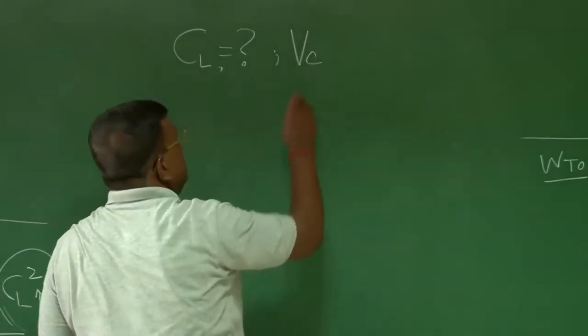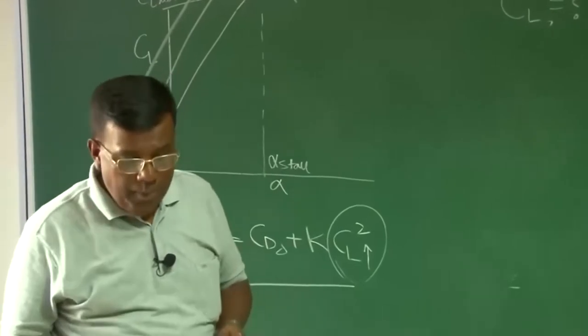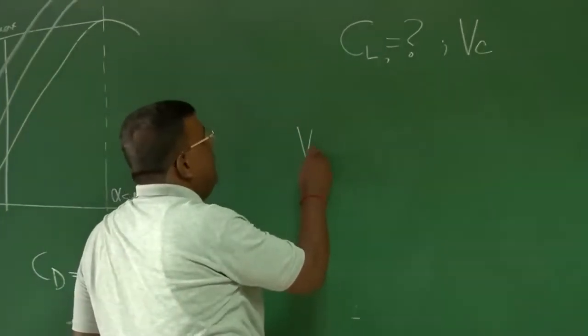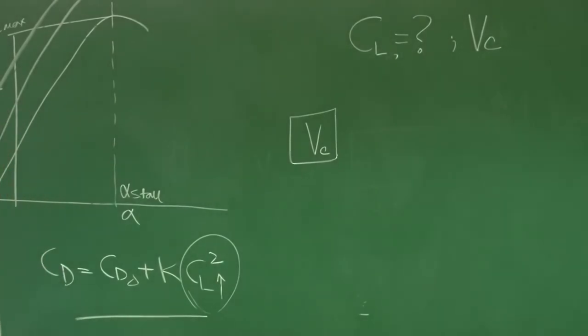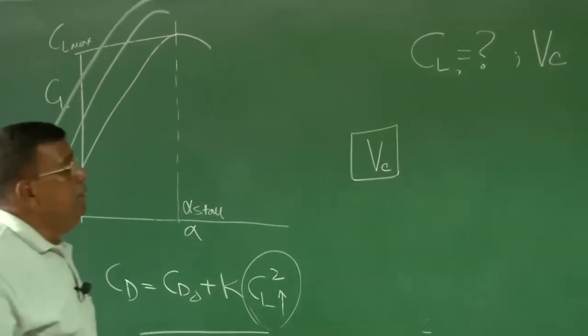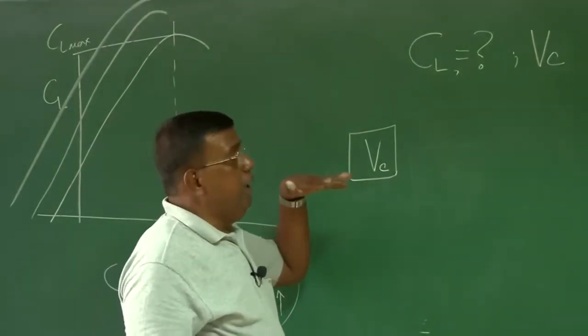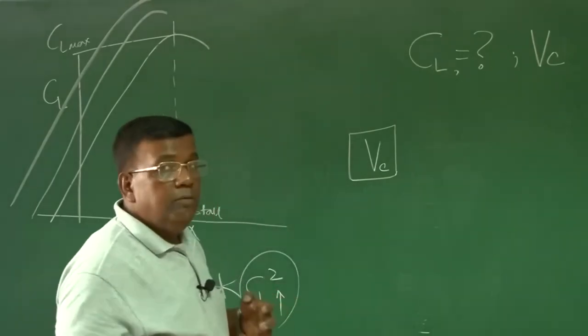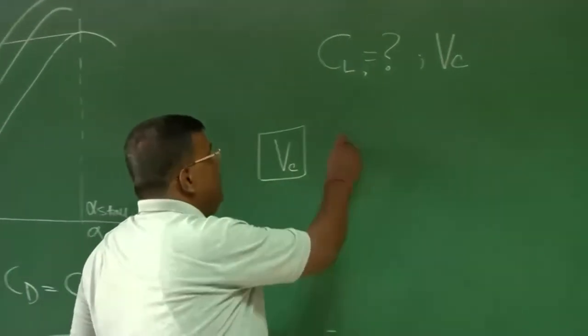Second question comes to mind, what is the V-cruise I want to fly, which is obvious question. You cannot just go like this, you always try to go faster. The problem is, which a designer should understand that if I am trying to fly at higher and higher speeds, because the airplane is moving in a medium, so there is a interaction between the aircraft and the medium, which is air in this case.